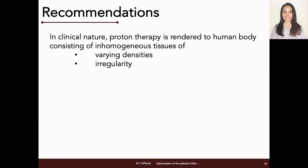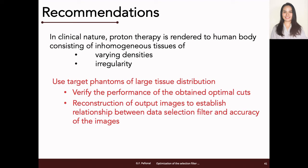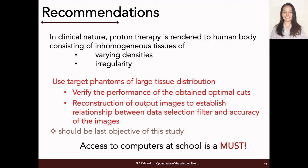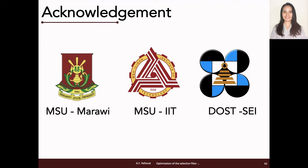However, in clinical practice, proton therapy is rendered to a human body of inhomogeneous tissues of varying densities and irregularities. Hence, the study further recommends the use of target phantoms with large tissue distribution to verify the performance of the obtained optimal cuts, and to reconstruct output images to establish the relationship between data selection filters and the accuracy of images. This recommendation should be the last part of the MS study; however, due to the unfortunate events currently happening, this work was not realized since this part of the study has high computational requirements requiring access to computers at school. Nevertheless, this research work successfully obtained substantial results.